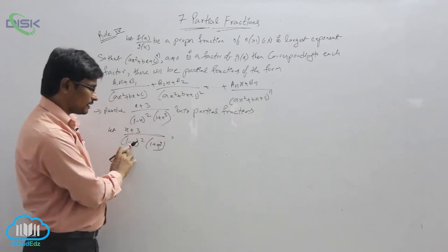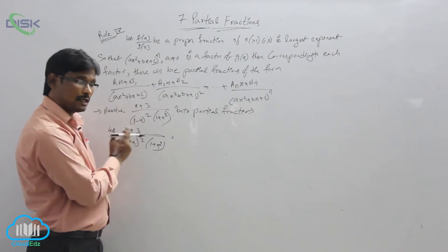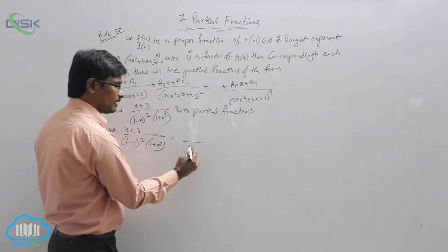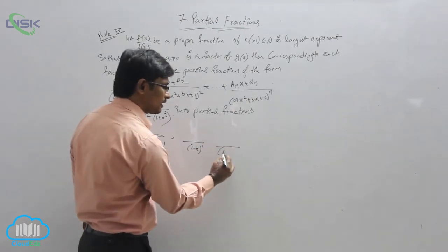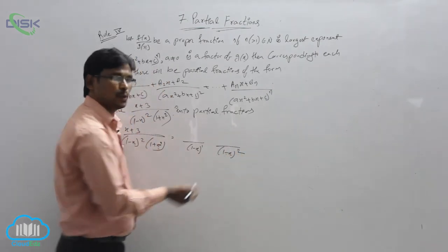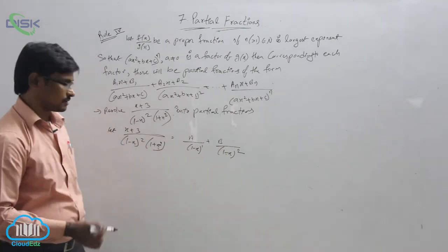Observe the first term, it is 1 minus x whole square. Now by the previous rule, we need to write 1 minus x whole power 1 and 1 minus x whole power 2, that is a by 1 minus x plus b by 1 minus x whole square.